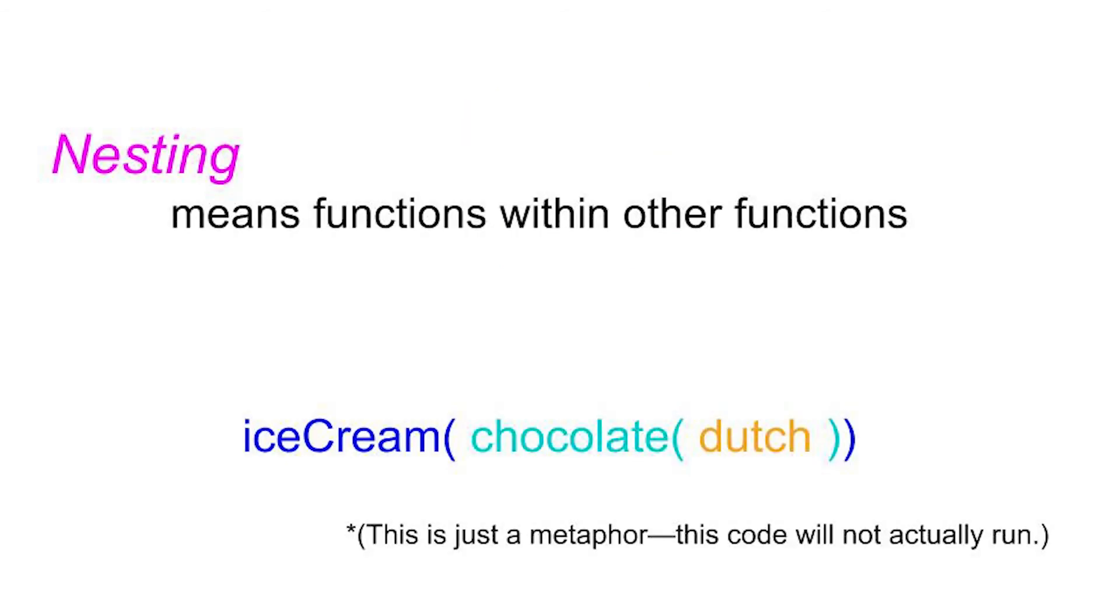So nesting means functions within other functions. Another way of looking at it is that it gets more and more specific. So let's use ice cream as an example, because who doesn't love ice cream? By the way, this will not run on your computer. It's just an example. But if I had ice cream as the function, I want to tell it what kind of ice cream to make. Ice cream is the machine. So I have my open parenthesis, my closed parenthesis, and inside I'm going to say I want to make Dutch chocolate ice cream. But chocolate is also a function, and it needs a parameter. I need to tell it which kind of chocolate to make, and that parameter is going to be Dutch. So in this example, chocolate Dutch serves as a parameter for ice cream, and Dutch serves as a parameter for chocolate.